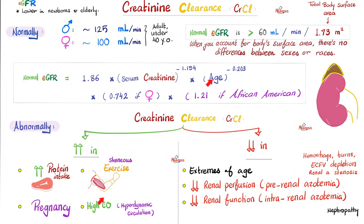Why is cardiac output high in pregnancy? Because the input is high — the venous return going back to the heart increases. When input is high, output is high. Why is venous return higher? Because plasma volume increases during pregnancy.